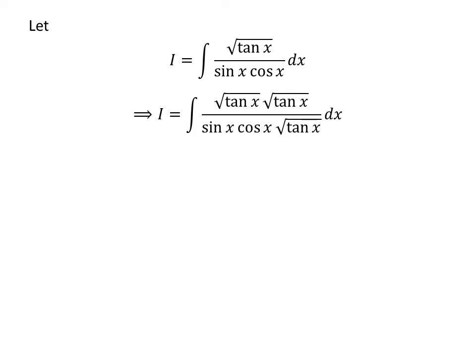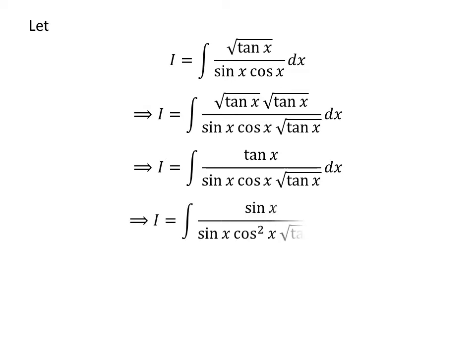Multiplying the numerator and the denominator of a fraction by a common factor does not change the value of the fraction. Let us multiply the numerator and the denominator of the integrand by square root of tangent of x. Square root of tangent of x times square root of tangent of x is equal to tangent of x. We know tangent of x is equal to sine of x upon cosine of x. So i is equal to the integral of sine of x upon sine of x times square of cosine of x times square root of tangent of x with respect to x.